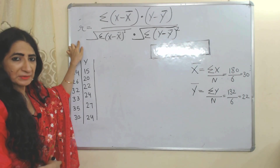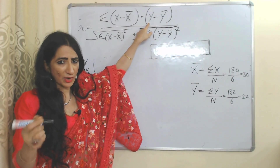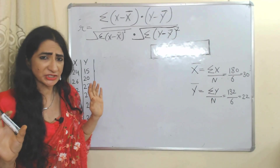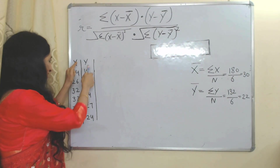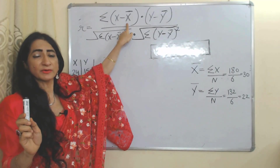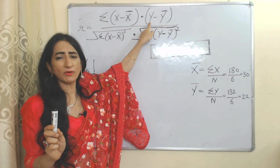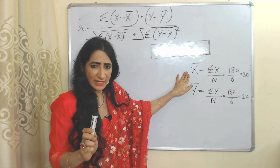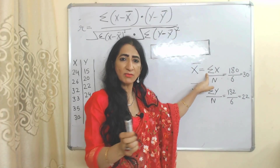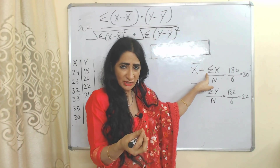In this formula, the values of x and y are always given in the question. x̄ means we will calculate the mean of x variable, and ȳ means we will calculate the mean of y variable. The formula for x̄ is summation x divided by n, where summation means the sum of values.